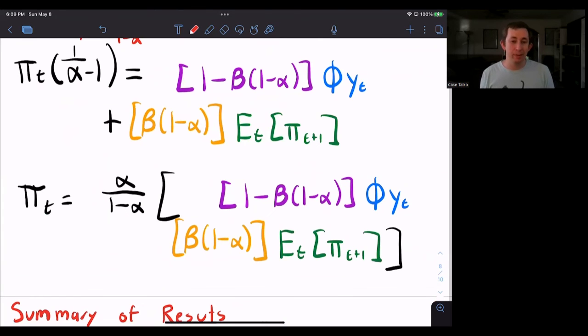Notice that what I've gotten is the expectations augment Phillips curve, because my inflation is a function of expected inflation tomorrow and the output gap today or the difference between the output and the natural rate of output.